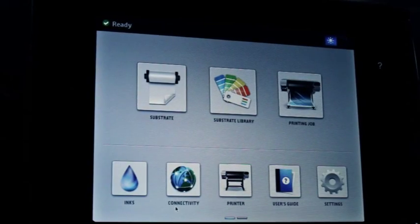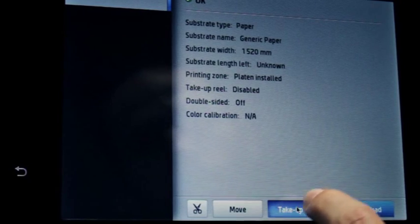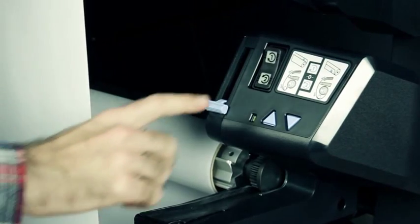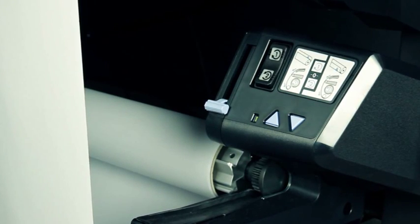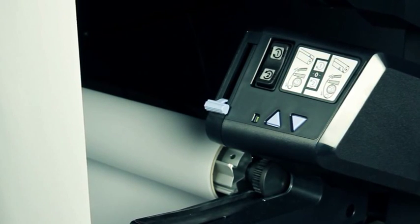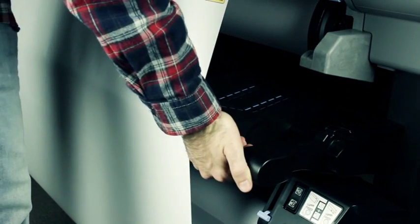At the printer's front panel, select the substrate icon, then select take-up reel. Switch the winding direction switch to the off position. The switch is in the off position when it is in the center position. In other words, when the switch is neither in position 1 nor position 2.